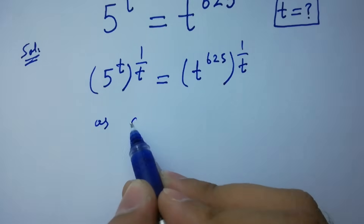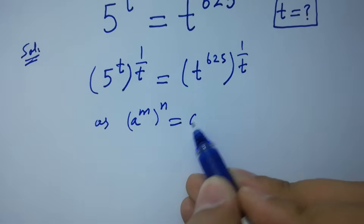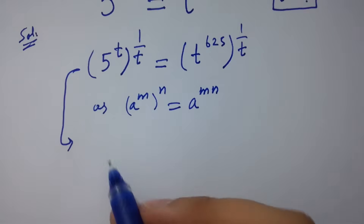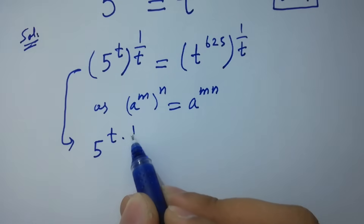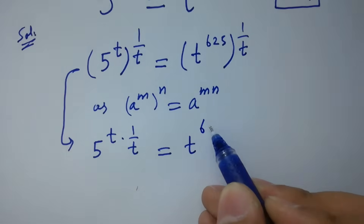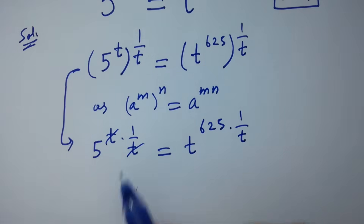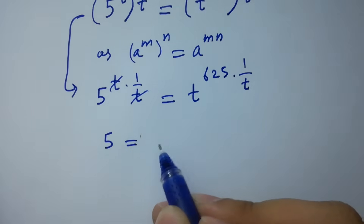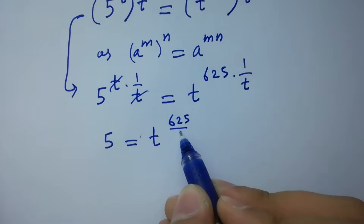Using the rule: a to the power m, to the whole power n, equals a to the power m times n. It becomes 5 to the power t times 1 over t, equals t to the power 625 times 1 over t. When t and t cancel, we have 5 equals t to the power 625 over t.